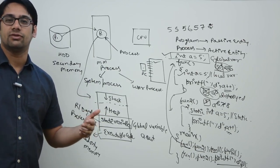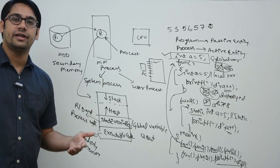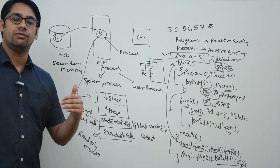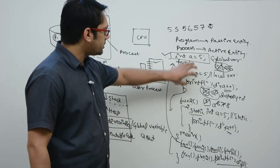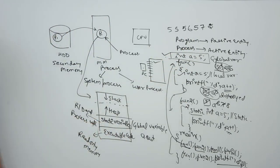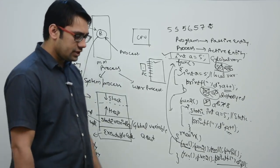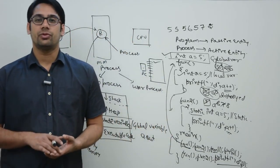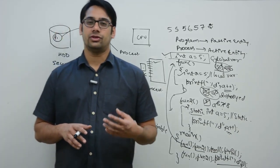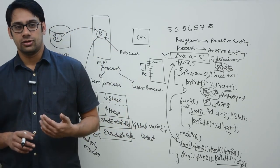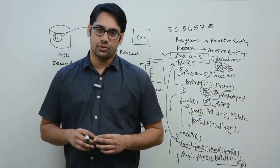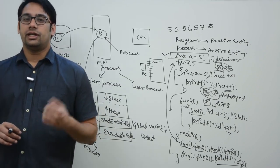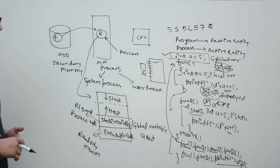Static variables and global variables require a separate memory area and are stored there. The rest of the memory is divided into stack and heap. The stack is essential for recursive programming — it lets you track previous function calls. Without a stack, recursive programming would not be possible. Heaps are used to arrange and manage variables.